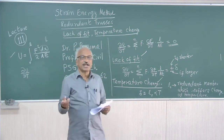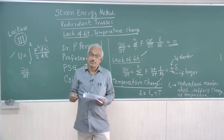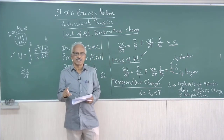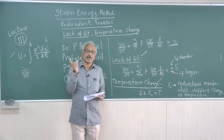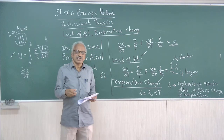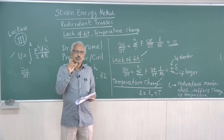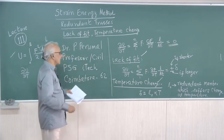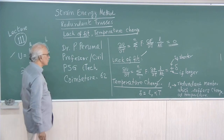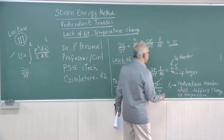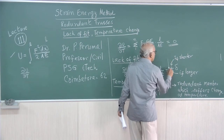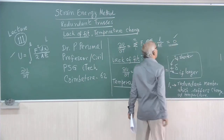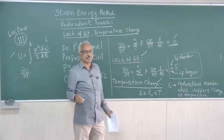If it is a statically determinate truss, there is no problem — it will adjust. But in the case of statically indeterminate trusses, when there is a lack of fit, that itself will cause stress in all other members. We are applying a tensile or compressive force to fit the member in position, so that causes force in all other members. In that case, in the place of zero, you get a plus or minus delta.